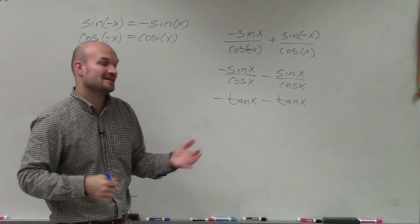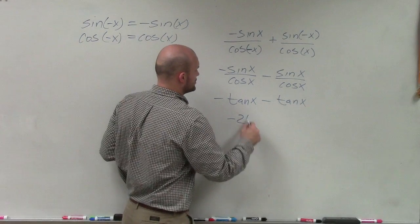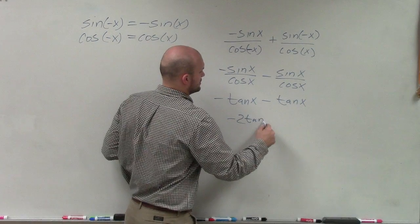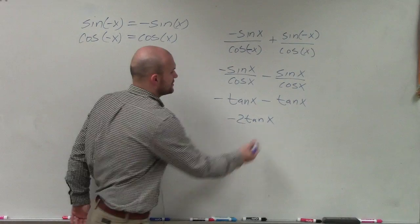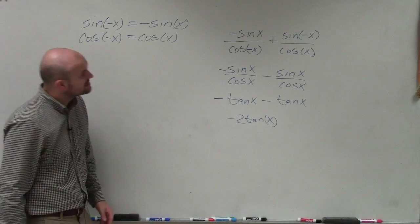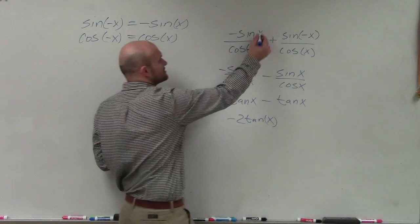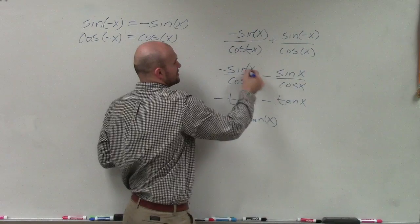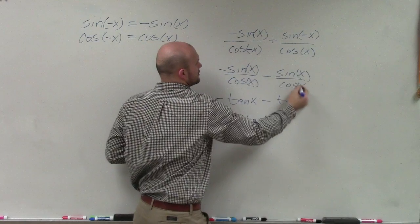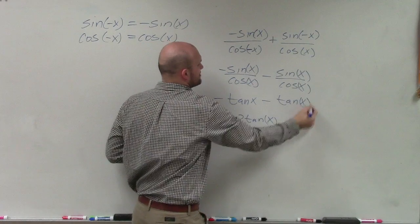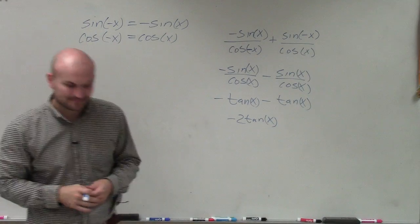Negative tangent of x minus tangent of x is going to be negative 2 tangent of x. So there you go, ladies and gentlemen. That is how you simplify by using your even and odd identities.